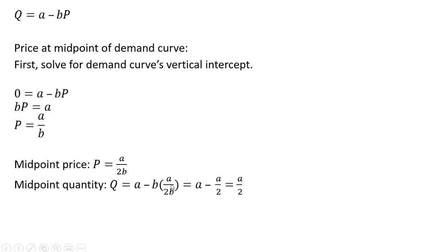A minus B multiplied by P, where P is A divided by 2B. You'll notice the B's cancel. Then you have A minus A divided by 2, which is just A divided by 2.